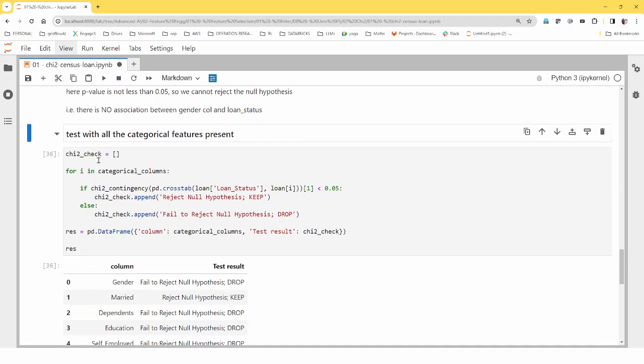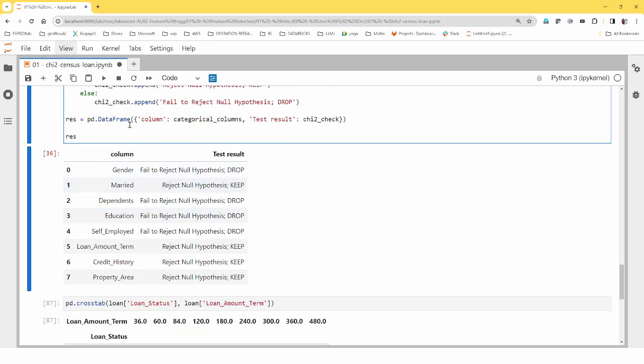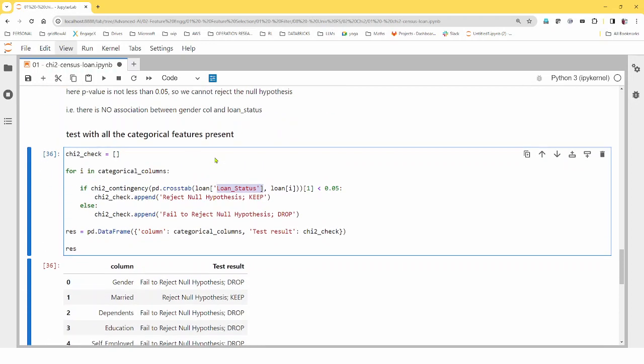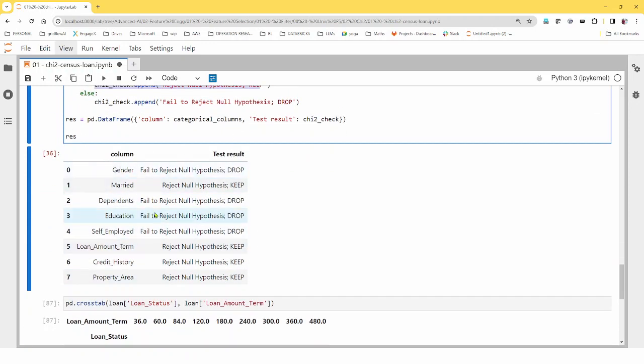But likewise, you can do it with all the categorical column apart from the gender. So against the loan status and run the chi-square and wherever you find the value less than 0.05, you can have a comment to keep or drop. Okay. So this gives you an ability or one more method to say whether certain columns should be eliminated, dropped, or kept in the model.